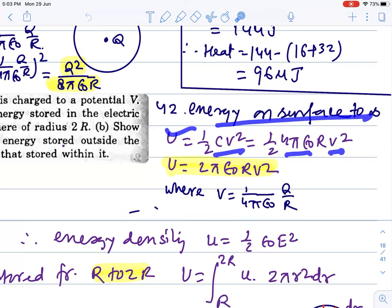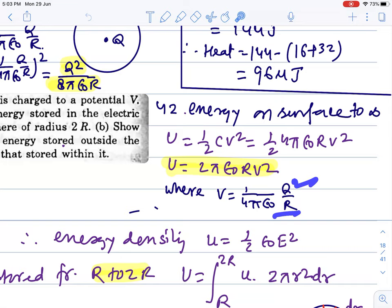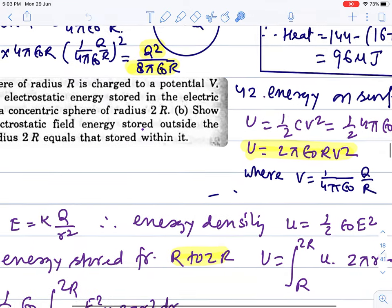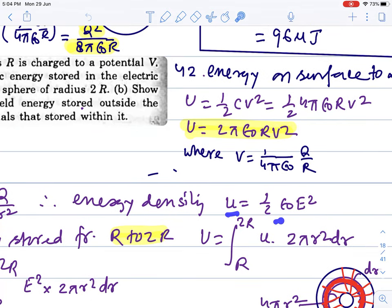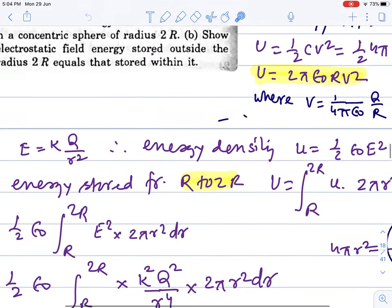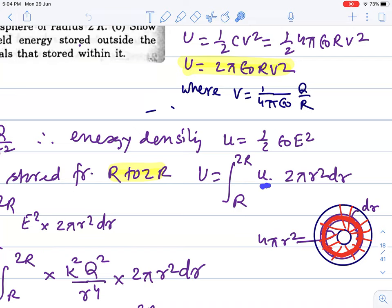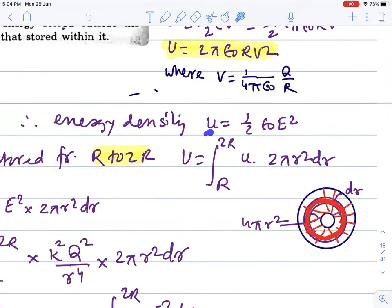So how much energy will be inside it? The electric field is variable, so the energy from the surface to infinity where V will be KQ by r. Now we have r to 2R. We will use the formula for electric field energy density — how much energy per cubic meter — which is half epsilon naught E squared. We put in the E value for this unit volume and the volume of the elementary shell.